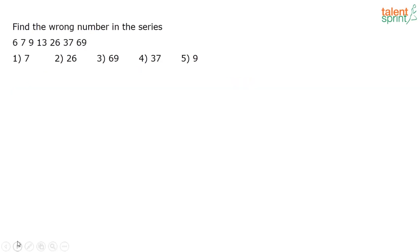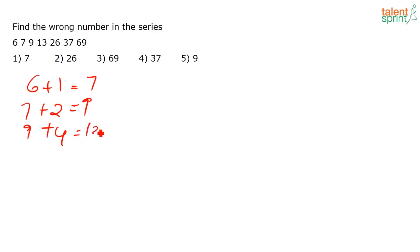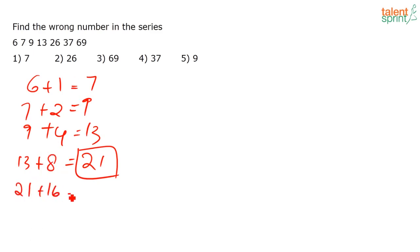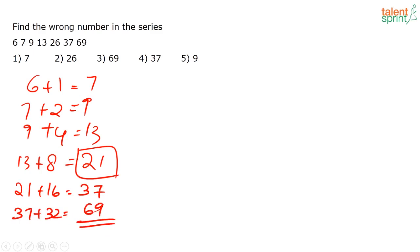Final wrong-number question. Series: 6, 7, 9, 13, 21, 26, 69. Pattern: differences are 1, 2, 4, 8, 16, 32 — each doubling. So 6+1=7, 7+2=9, 9+4=13, 13+8=21, 21+16=37, 37+32=69. The wrong number is 26 — it should be 37.